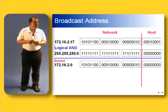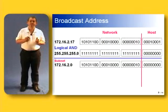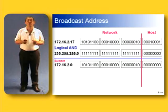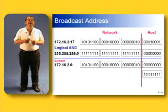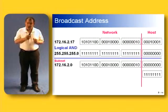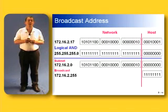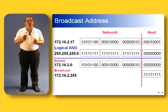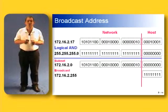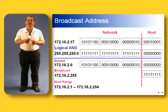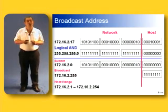Let's do it again. Same address, 172.16.2.17, but with a different mask this time: 255.255.255.0. We do the logical AND between the two addresses and we get a subnet address of 172.16.2.0. We know that if we set the host portion to all ones and add in the subnet portion of the address, that gives us the broadcast address of 172.16.2.255. So the host range is from 172.16.2.1 all the way up to 172.16.2.254.